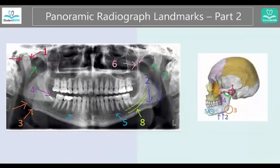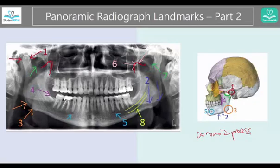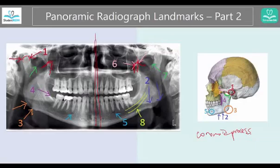Number six is this area — it's a little difficult to see. This is the coronoid process, not to be confused with the condyle we already talked about. This is again towards the midline. One way to see it is to locate the condyle and go a little below and towards the midline to find it. Another good answer for the number six area would also be the lateral border of the maxillary sinus.